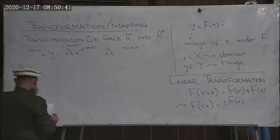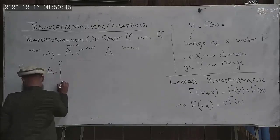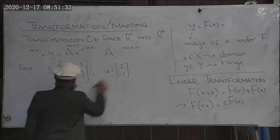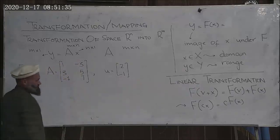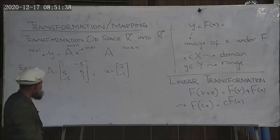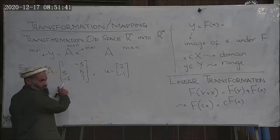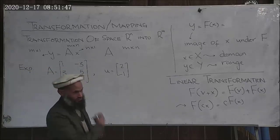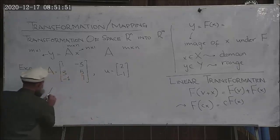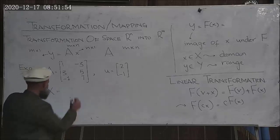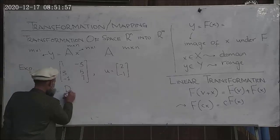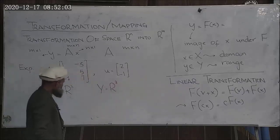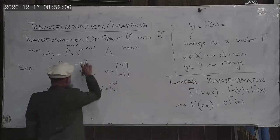Here is an example. We have a matrix A given here, and we want to find the image of a vector u under this transformation. What is the domain and range of this transformation? It maps a vector which belongs to R2 into R3. Please find the image of this vector under this transformation.